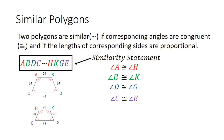Also, from the similarity statement, since we know that the two polygons are similar, the lengths of the corresponding sides are proportional. To get the corresponding sides, let's look at the first two letters in the similarity statement: AB. Side AB is going to correspond to side HK — that's going to be our first proportion. We'll follow that pattern to get the rest of the proportions and ratios.